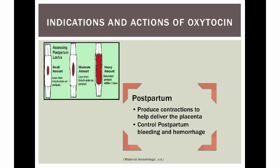After the baby is born, oxytocin is given to help in the third stage of labor to deliver the placenta. It is also given to control postpartum bleeding and hemorrhage.